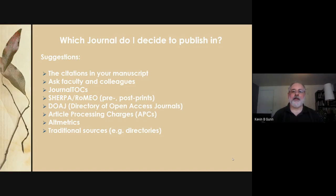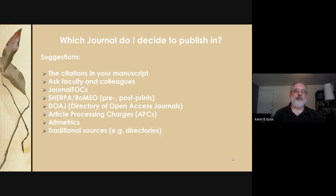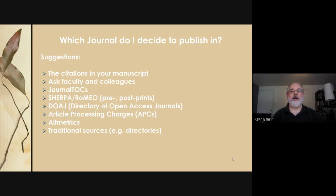You can also ask faculty and colleagues which journals would be most willing to accept your paper. One way to find out if your article would fit a particular journal is to look at the website Journal TOC — Table of Contents. You can search for a particular journal, look at the table of contents listings, and very quickly get a sense of what that journal publishes and what it avoids.